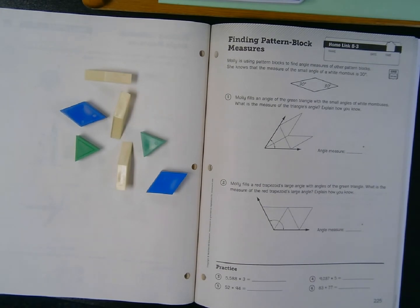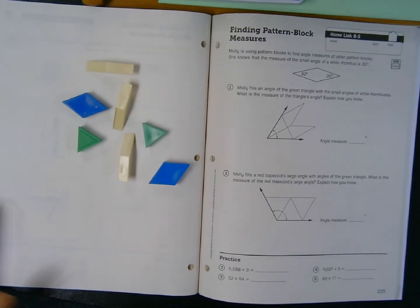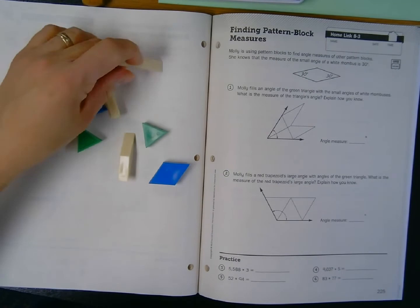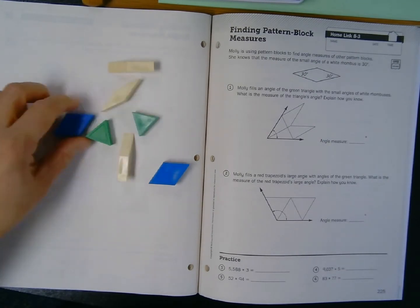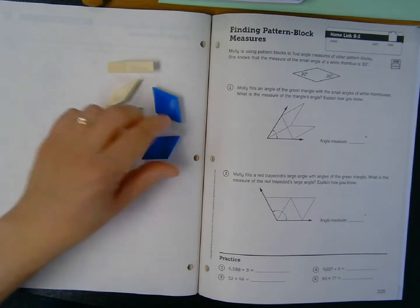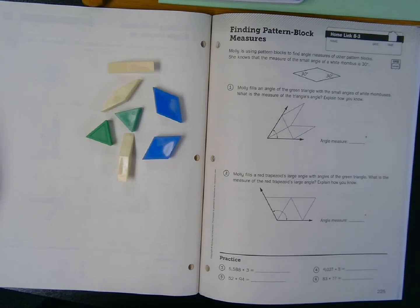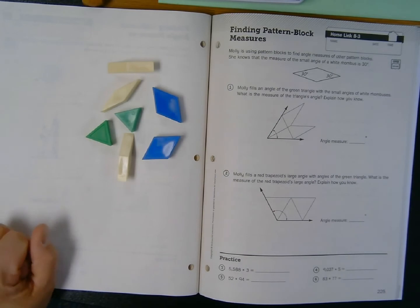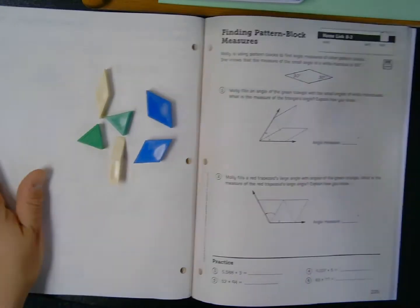We're in our home links unit 8 lesson 3, finding pattern block measures, on page 225. As you can see, I've got some of these rhombus and triangle and larger blue rhombus blocks at my disposal, but you don't necessarily need them to do any of the work here.